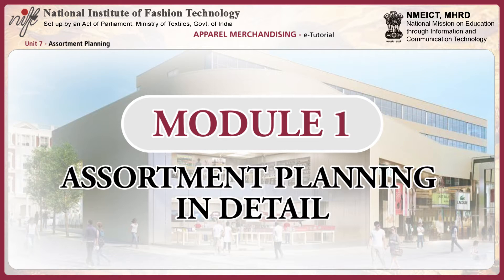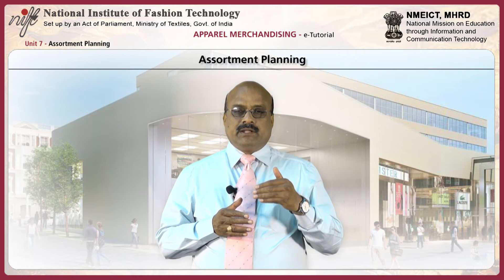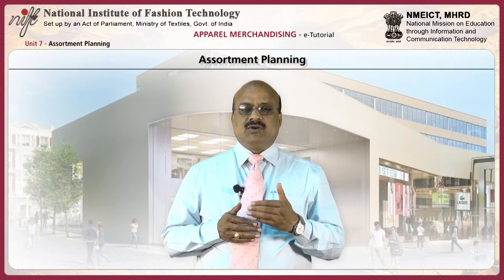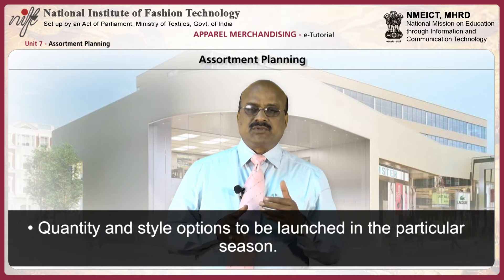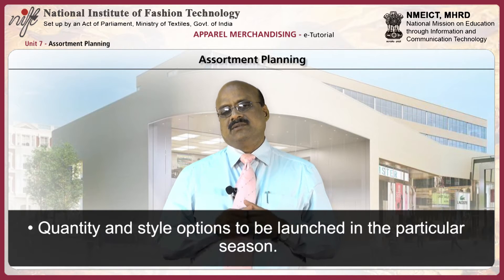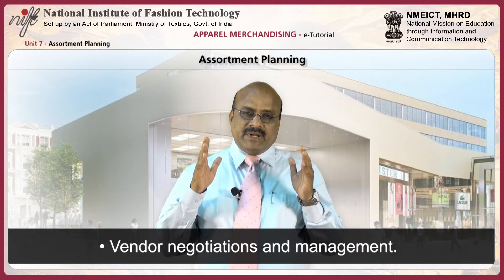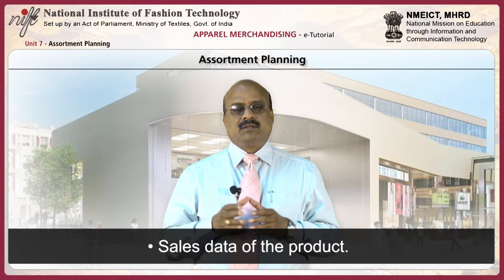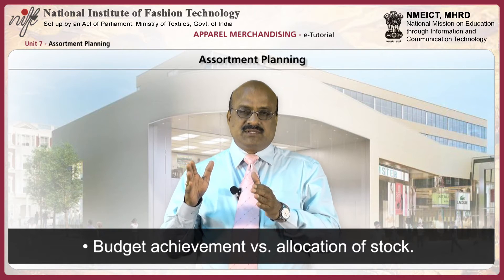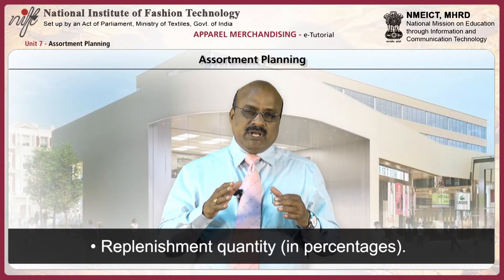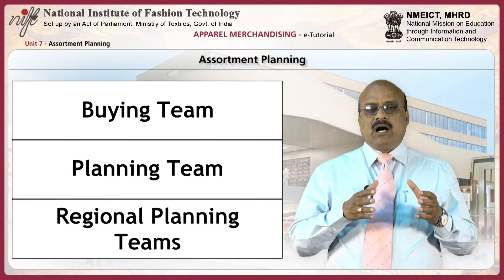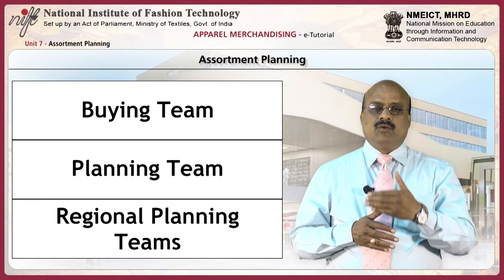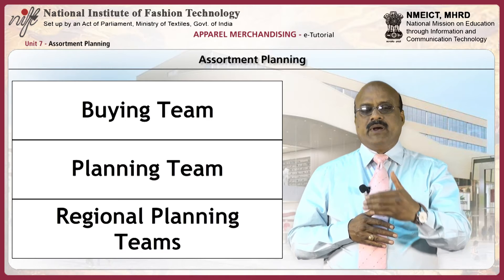Let us look at merchandise assortment planning in detail. The buying for a particular season happens prior based on factors such as quantity and style options to be launched, buying budget, vendor negotiations and management, stock on hand, sales data of the product, budget achievement versus allocation of stock, and replenishment quantity in percentages. After consideration of these factors, the buying team and planning team work out the open-to-buy for the coming season.